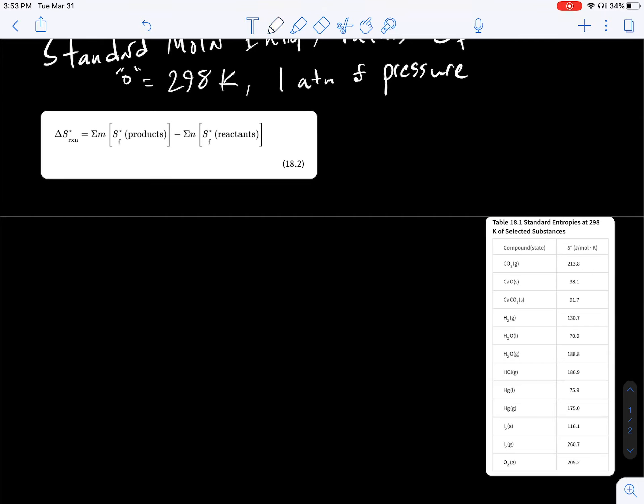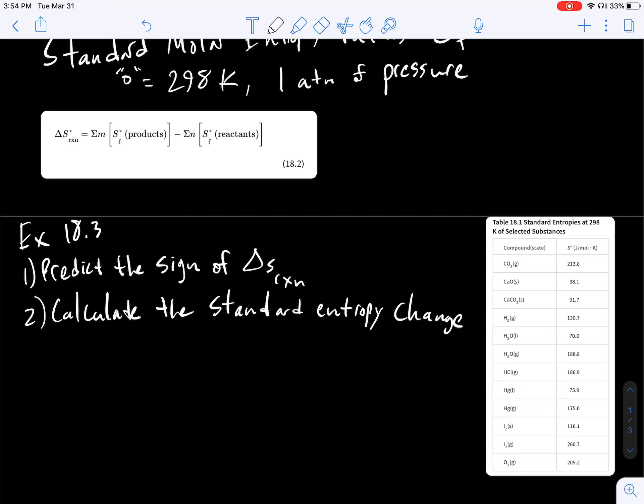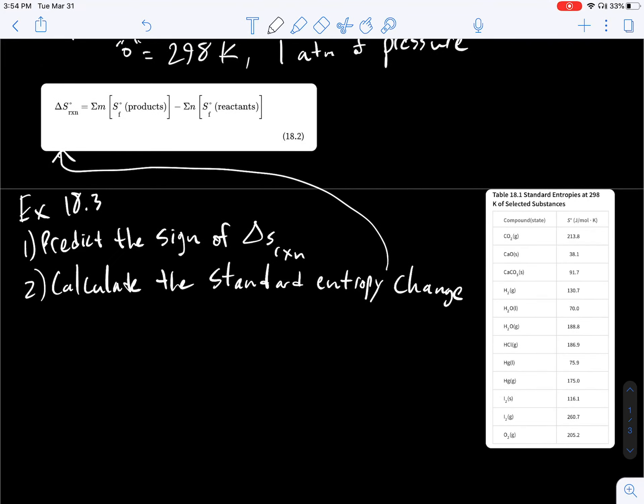So let's do a problem here. This is example 18.3. And 18.3 asks us to first predict the sign of delta S of the reaction or system, and two, calculate the standard entropy change. So if you see standard entropy change, you're thinking this equation up here using the values. So let's look at the reaction. We've seen this reaction many times. It's hydrogen gas combining with oxygen gas to produce H2O gas.